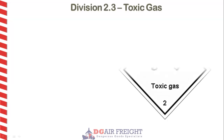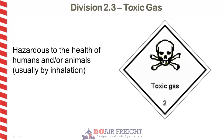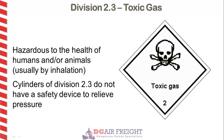Toxic or poisonous gases are gases or vapours known to harm, injure, disable, or kill upon inhalation or contact. Division 2.3 cylinders are not fitted with safety devices for the relief of pressure.